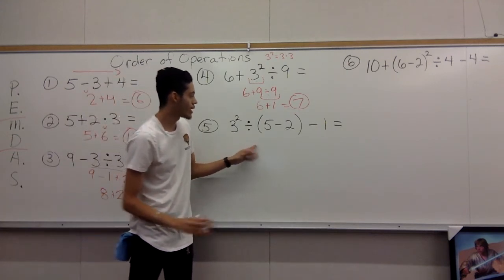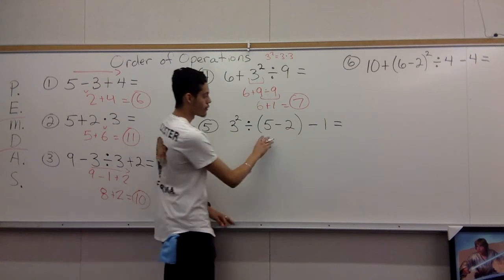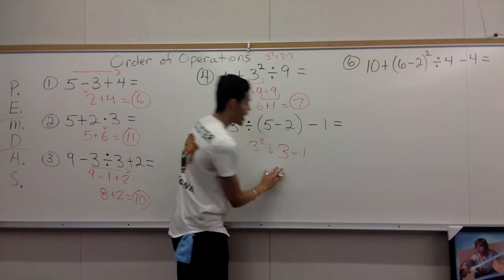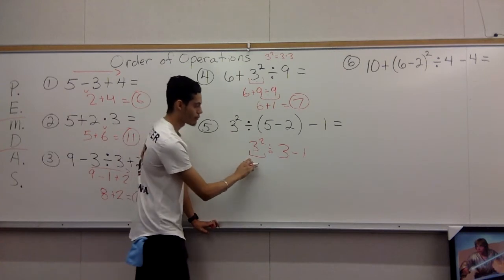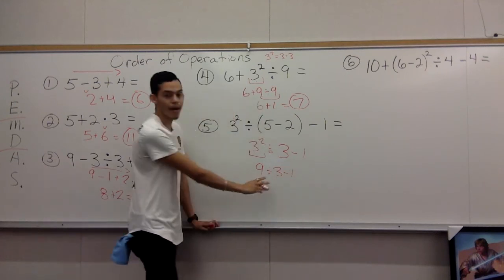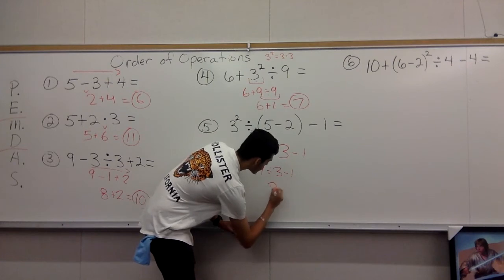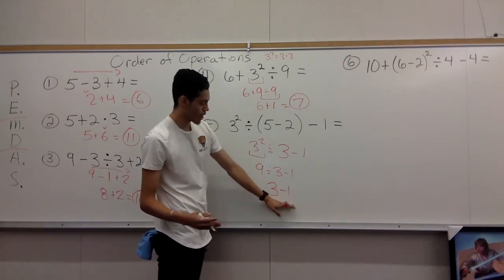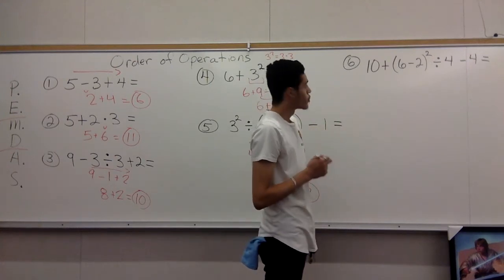Number five: three squared divided by, in parentheses, five minus two, minus one. Parentheses first — five minus two is three. Rewrite the problem. Exponents next — three squared is three times three, which is nine. Rewrite. Now nine divided by three minus one. Division goes first — nine divided by three is three. Then subtraction: three minus one is two. Two is the answer.